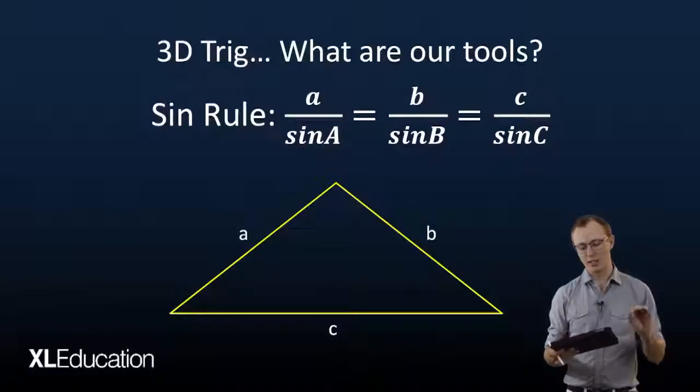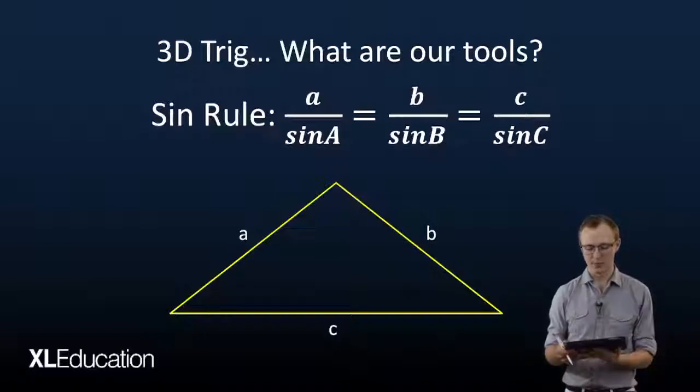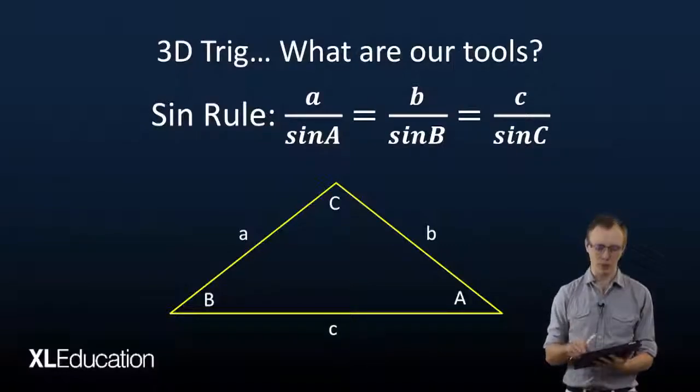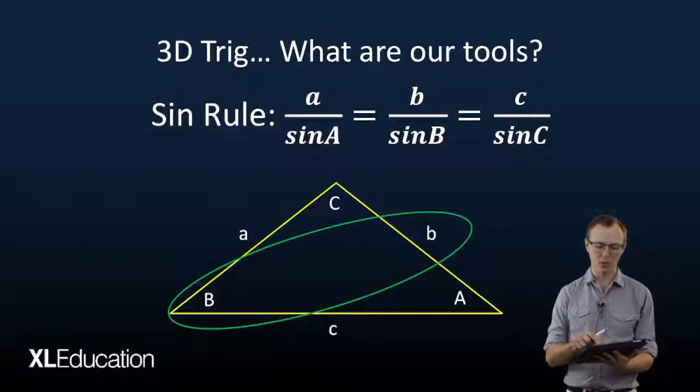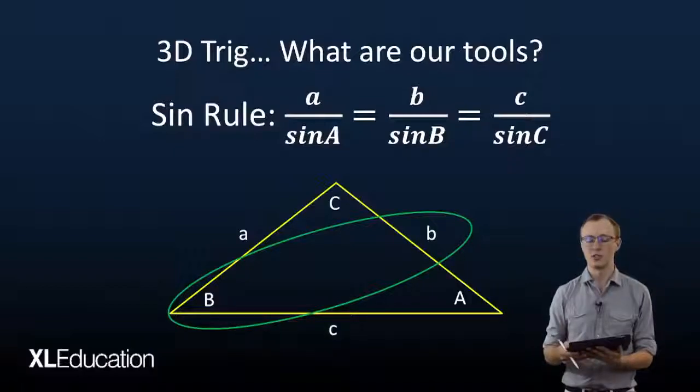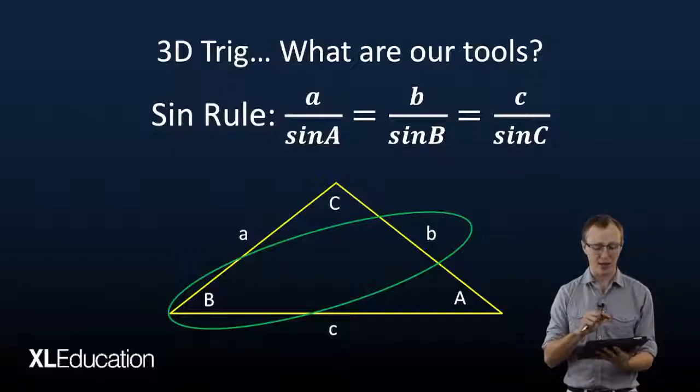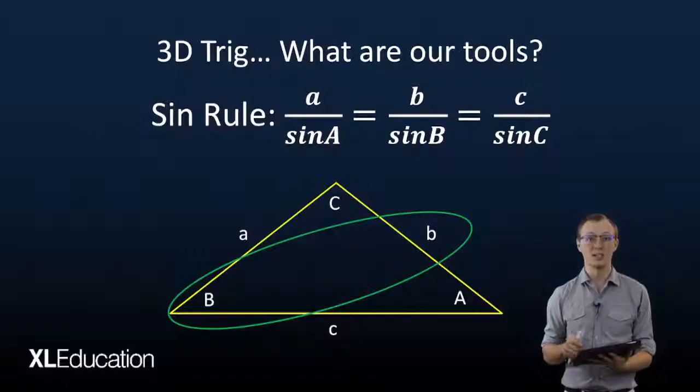We usually name the sides with small letters, so we use a, b, and c, and the angles we use capital letters. So a couple is when the capital letter and the small letter that are across from each other are together, like big B this angle there and small b the side.